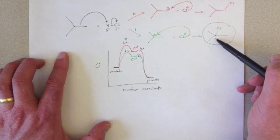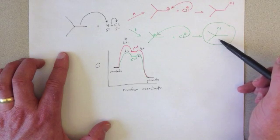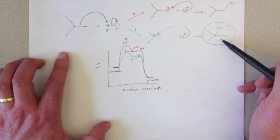And therefore, we get an accumulation of reaction B's product, the tertiary alkyl halide.